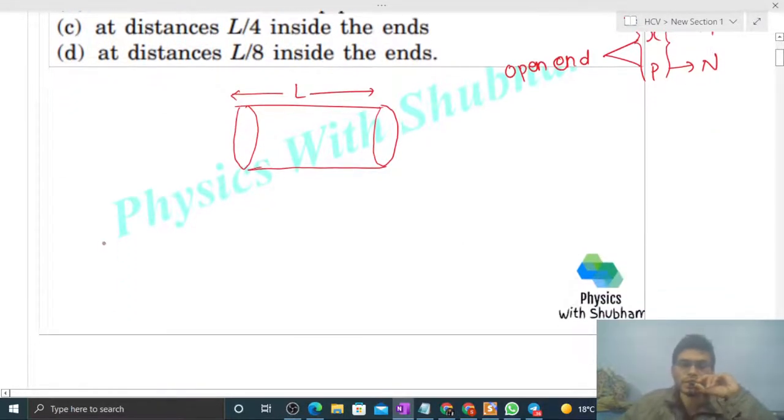Then you can see, the ends which are open will have an antinode, and there will be one node at the center, because we are drawing the fundamental vibration. So the diagram will look something like this. This is our diagram for the displacement wave.